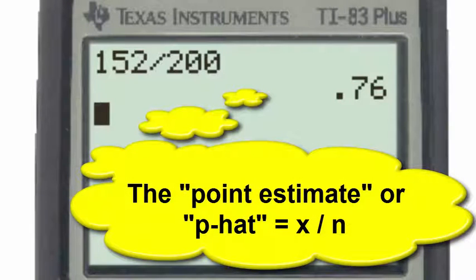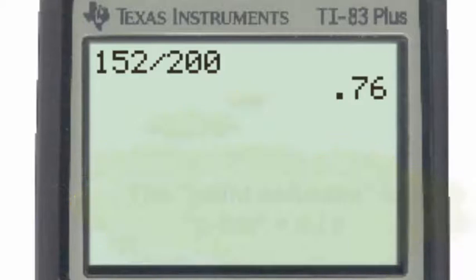So the proportion in our sample, which is the point estimate also known as p-hat, is 0.76. Although the proportion in our sample is 0.76, the actual proportion in the population is probably not exactly 0.76, but we will use 0.76 as a basis of a guess range of what the actual population proportion is.